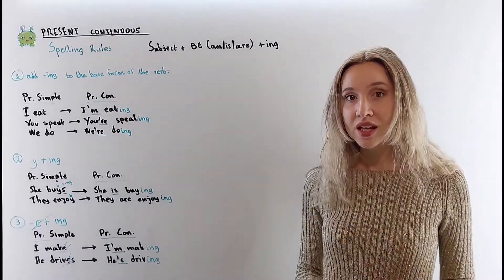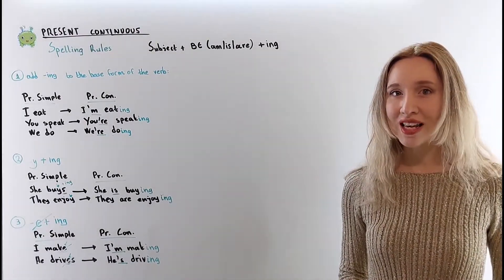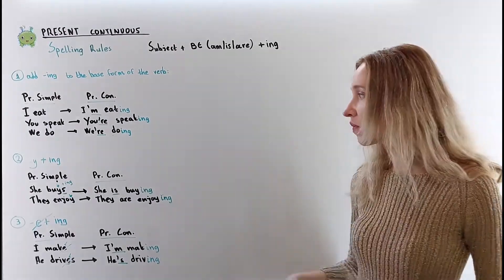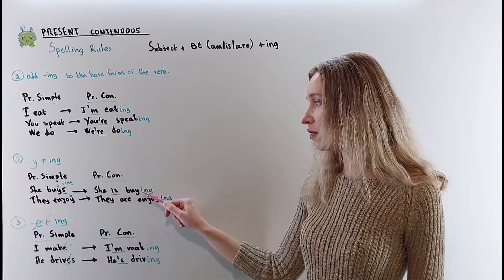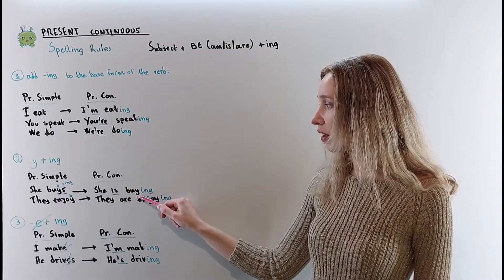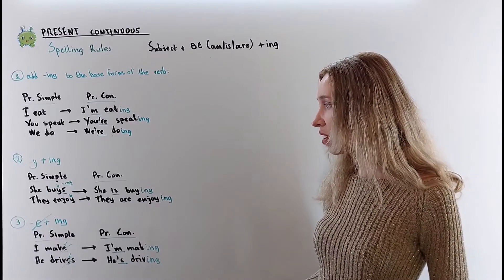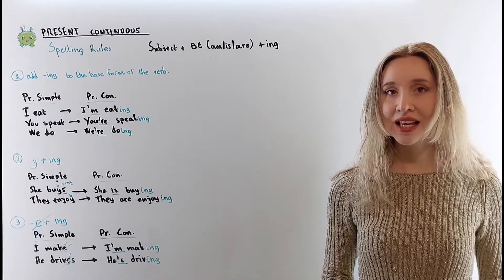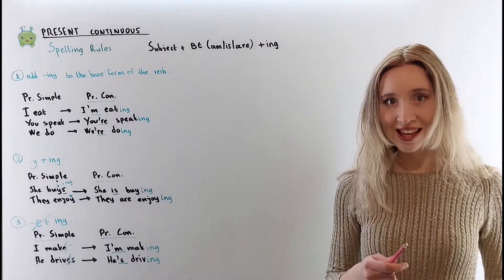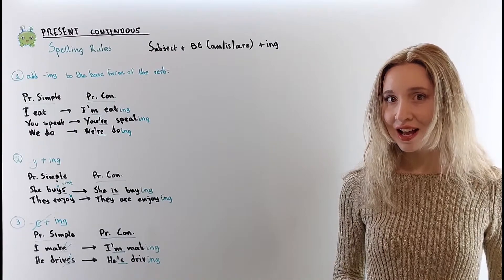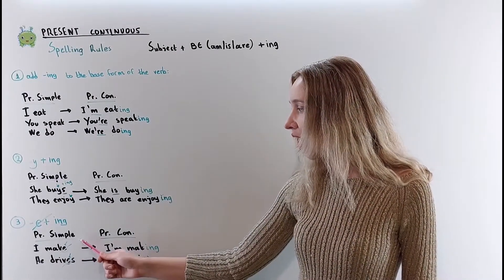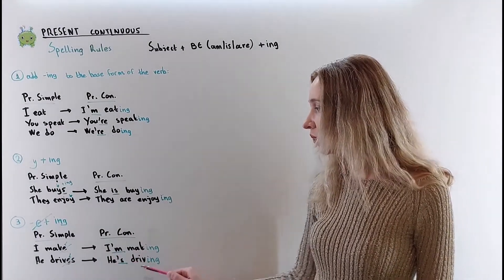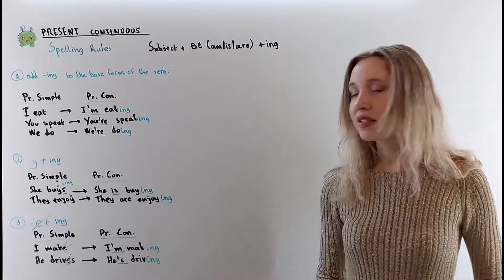If your verb ends in Y, don't remove the Y — just add ING. She buys → she is buying. I didn't remove the Y here. They enjoy → they are enjoying. When the verb ends in E, remove the E and then add ING. I make → I am making. He drives → he's driving.